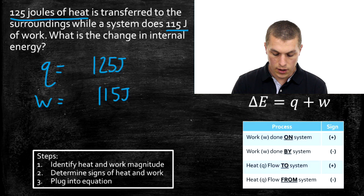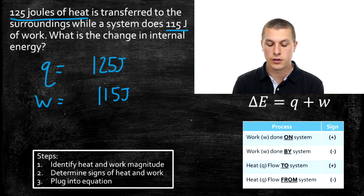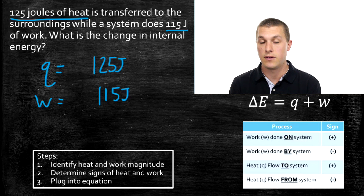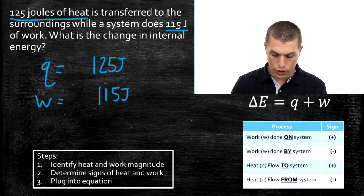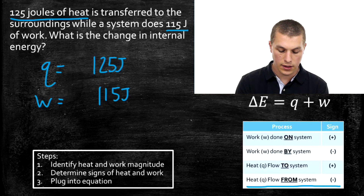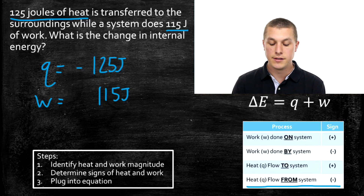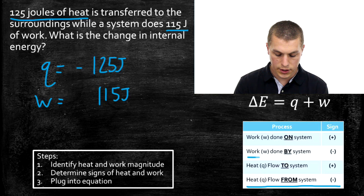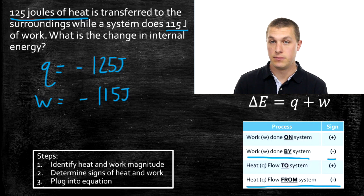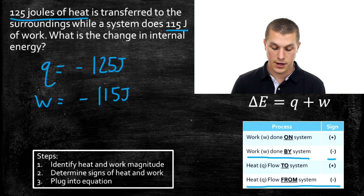Step two — determine the signs. In these problems we only have the system and the surroundings. The heat is transferred to the surroundings, which means it's coming from the system, so heat is lost from the system — that's a negative sign for Q. For work, the problem says the system does 115 joules of work, meaning it's work done by the system, which is also a negative change. Both Q and W are negative, which makes sense: the system gives up heat and does work, both decreasing its internal energy.